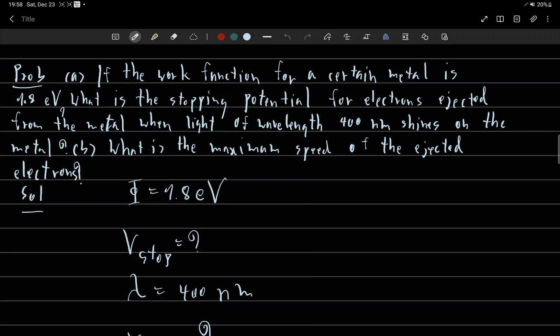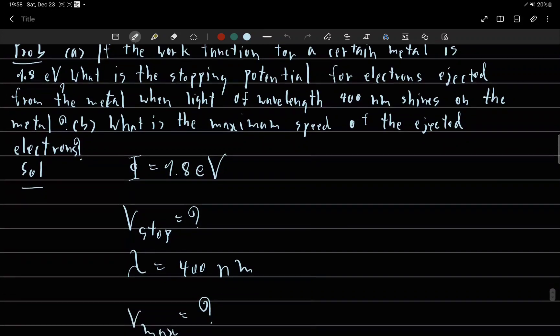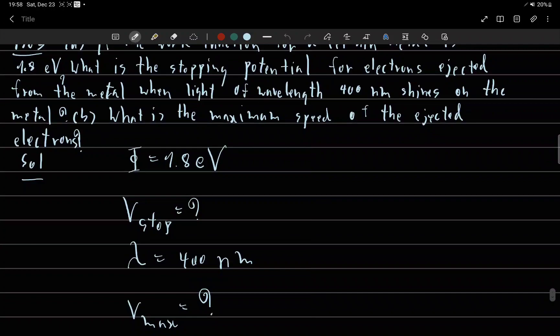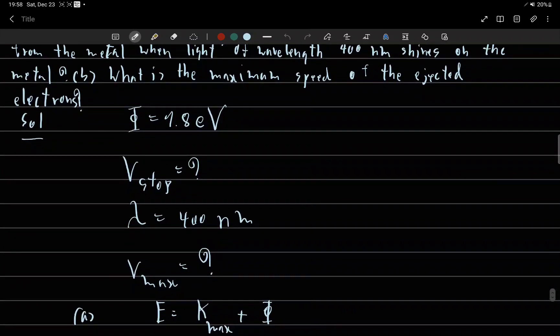So we have this information: work function and lambda, and we have unknowns for V-stop and V-max. First, for part a,